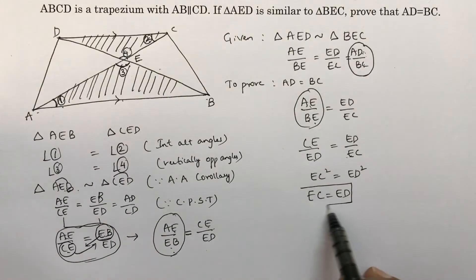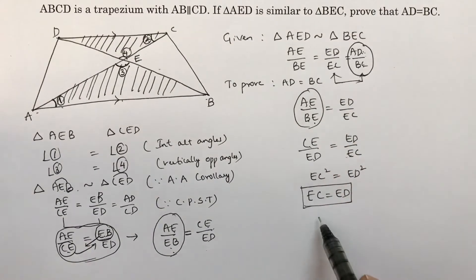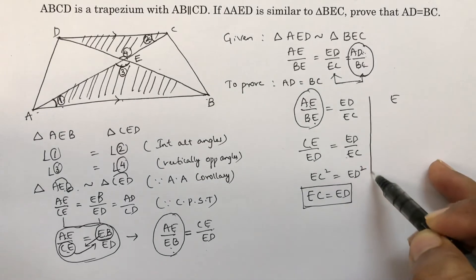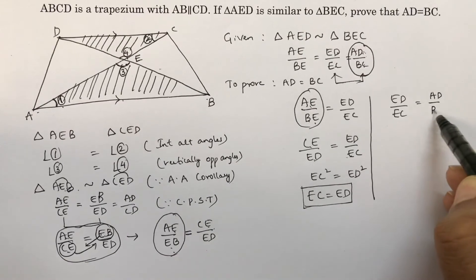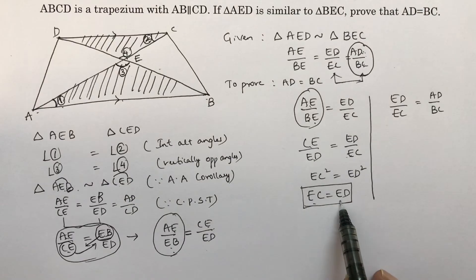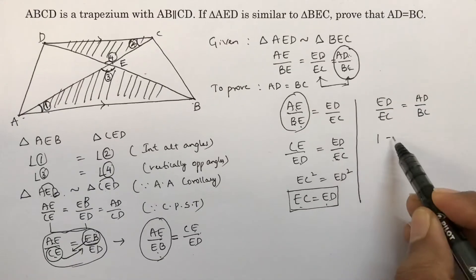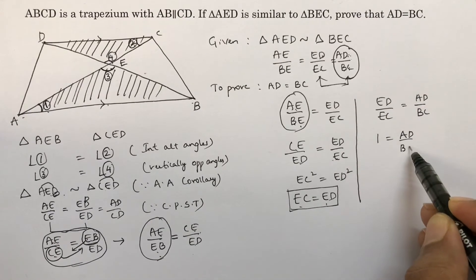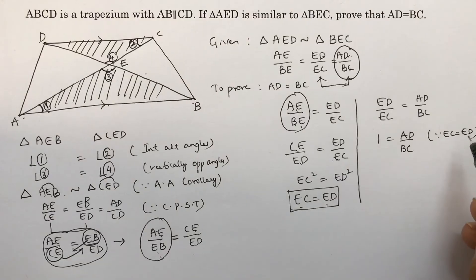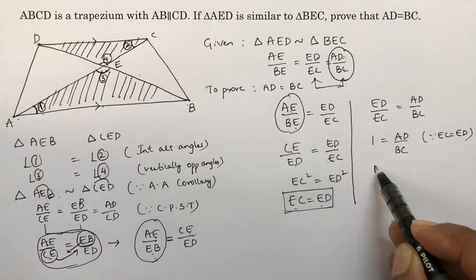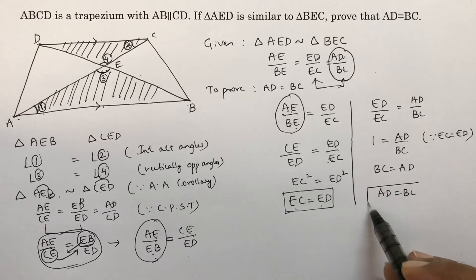EC equals ED, so this value is 1. Now take these two terms. ED by EC equals AD by BC. But see, EC equals ED, so this value is 1 equals AD by BC. Reason: EC equals ED. Now if you will cross multiply, BC equals AD, or otherwise you can write AD equals BC. So hence we got the answer.